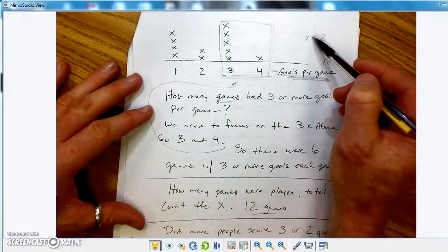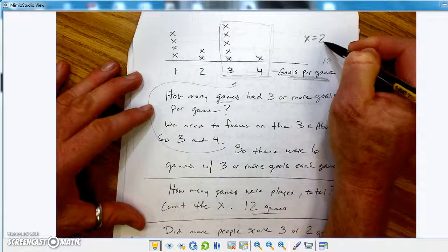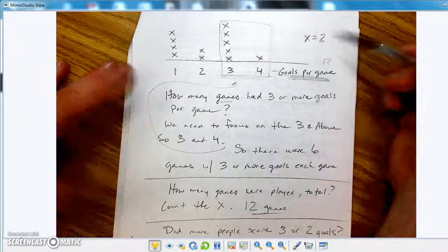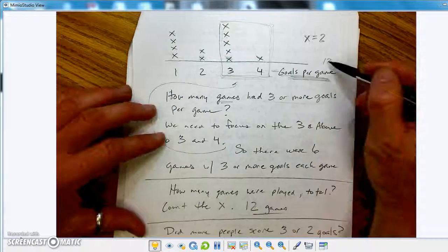So you would block in goals per game, 3 or more. That would be 3 and 4. So you would block in these 4, or these right here, and count them up. 1, 2, 3, 4, 5, 6. So that would be 6.